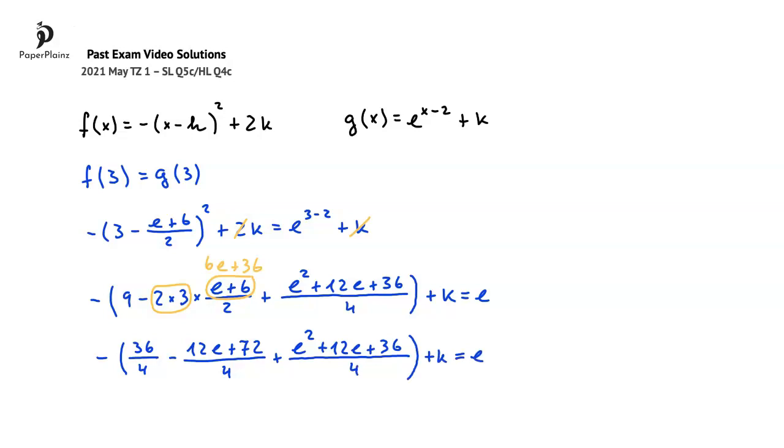Now we are ready to collect terms inside the brackets. We have 36 plus 36, and minus 72, so these cancel each other out, and we also have negative 12e and plus 12e, which will also cancel.